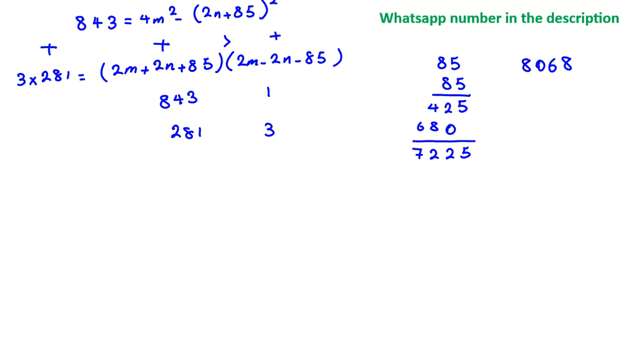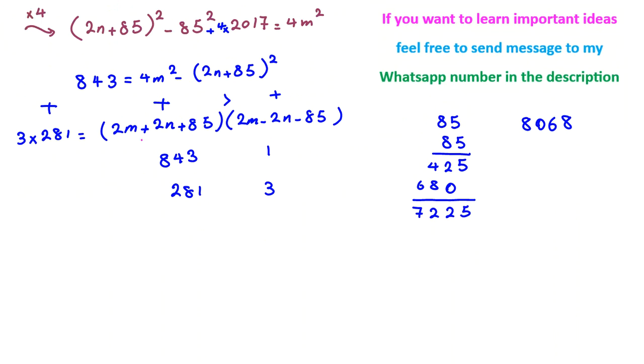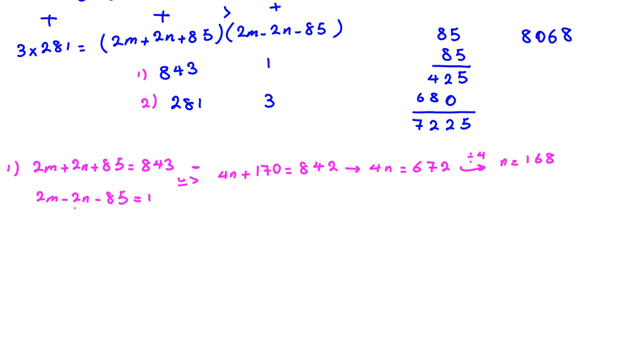If you want to find n first, this minus this is what? 2m will be canceled if you subtract. Case 1: you say 2m plus 2n plus 85 is 843, and 2m minus 2n minus 85 is 1. Then if we subtract this one minus this one, 4n plus 170 equals 842. So if we subtract 170 from both sides, it will be 672. And if we divide both sides by 4, n will be 168. And you can check also n will be okay because here it's even, it's odd, odd. So you can take all these things, right side will be even, so you can divide by 2.